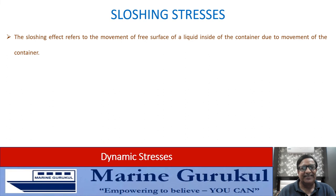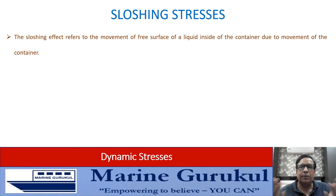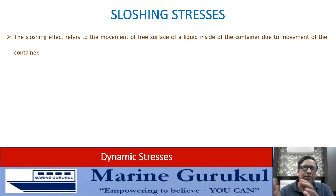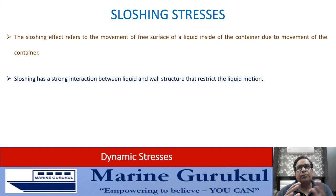Sloshing stresses: the sloshing effect refers to the movement of the free surface of a liquid inside a container — in our context, the liquid inside a ship's tank. If a tank is slack — meaning neither empty nor 100% full — then as the ship moves due to rolling or pitching, the liquid in the tank also tends to move, having a strong interaction with the tank walls.